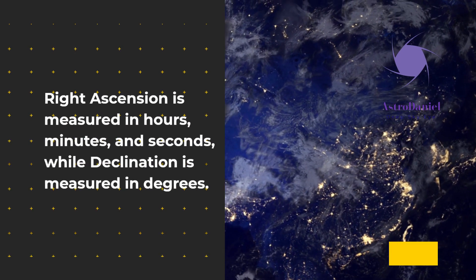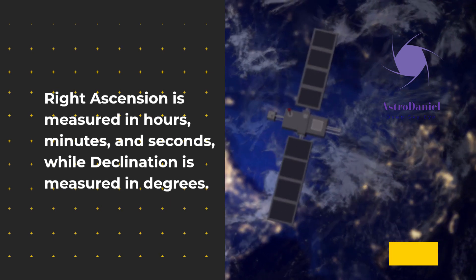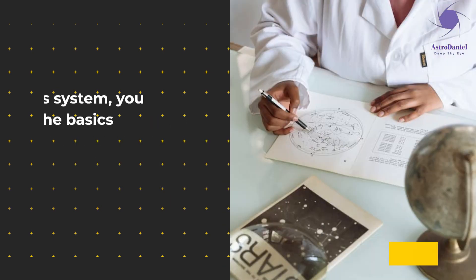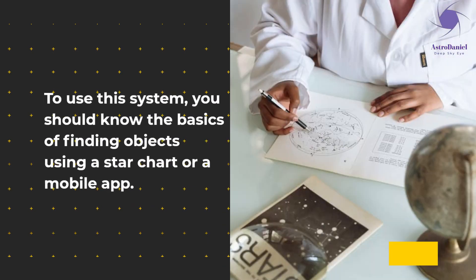Right ascension is measured in hours, minutes, and seconds, while declination is measured in degrees. To use this system, you should know the basics of finding objects using a star chart or a mobile app.